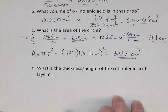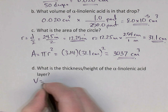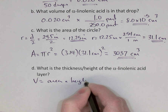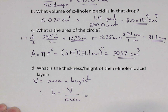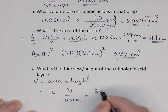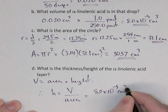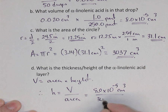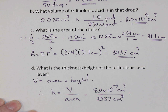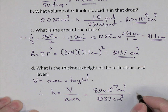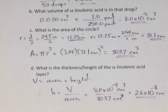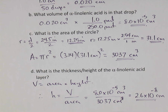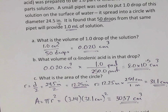Now, what's the thickness of the layer — the height? As we saw earlier, volume equals area times height, therefore height equals volume divided by area. The volume of the acid was 8.0 × 10⁻⁵ cubic centimeters, divided by the area of the circle, 3,037 square centimeters. We get 2.6 × 10⁻⁸ centimeters as the thickness of that layer. So there's a standard problem very similar to what we did in the lab with oleic acid.